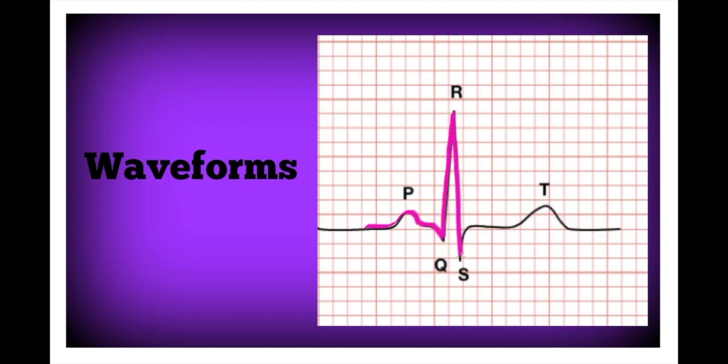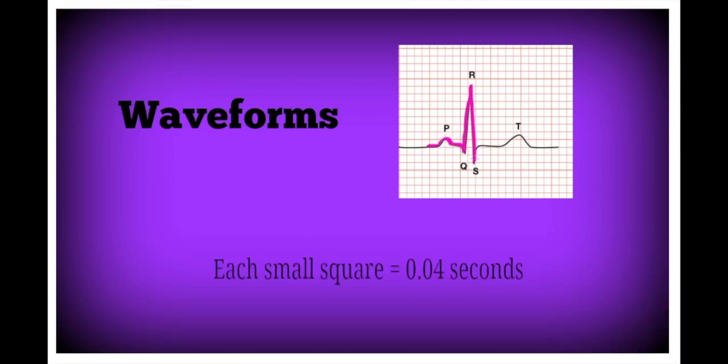Each contraction of the heart produces identifiable waveforms on an ECG. Being able to interpret each of these components helps us to identify if our heart is beating normally or abnormally. In addition to identifying these waveforms, we will also be measuring their duration and that will give us more information as to where the abnormality is occurring within the heart.